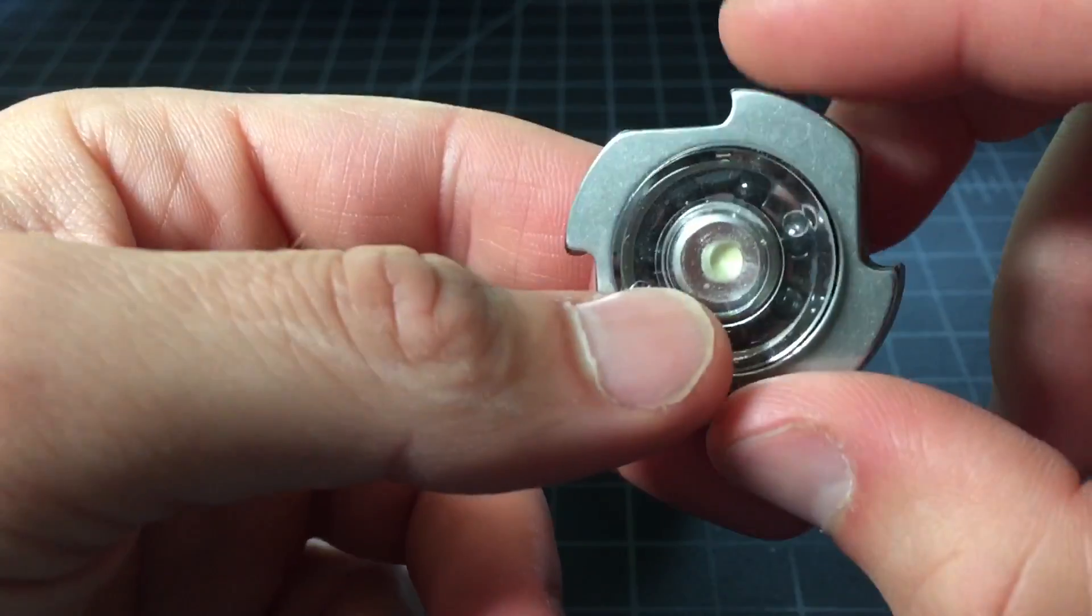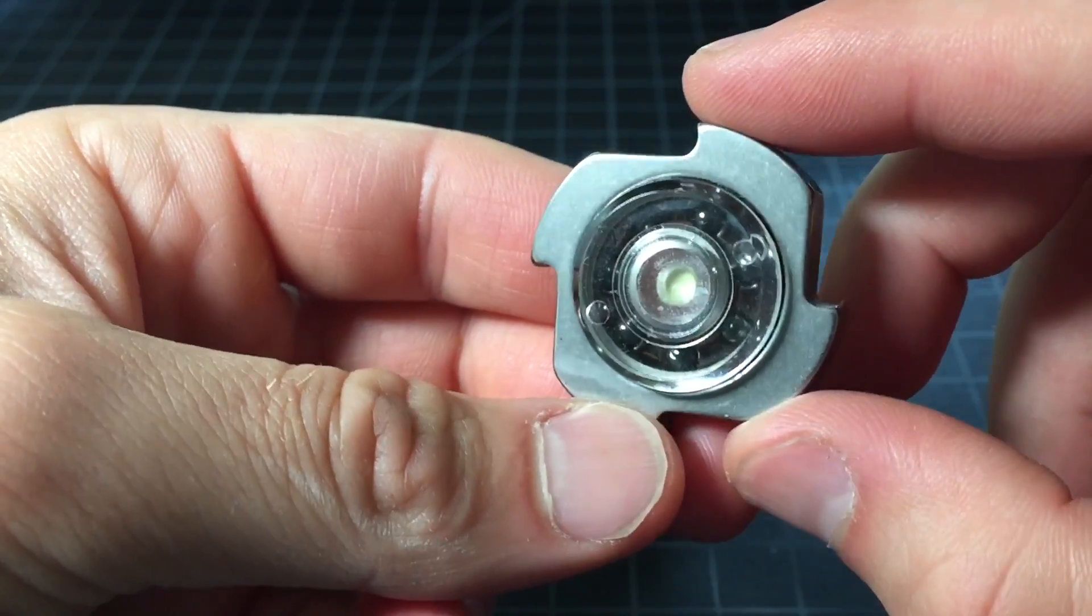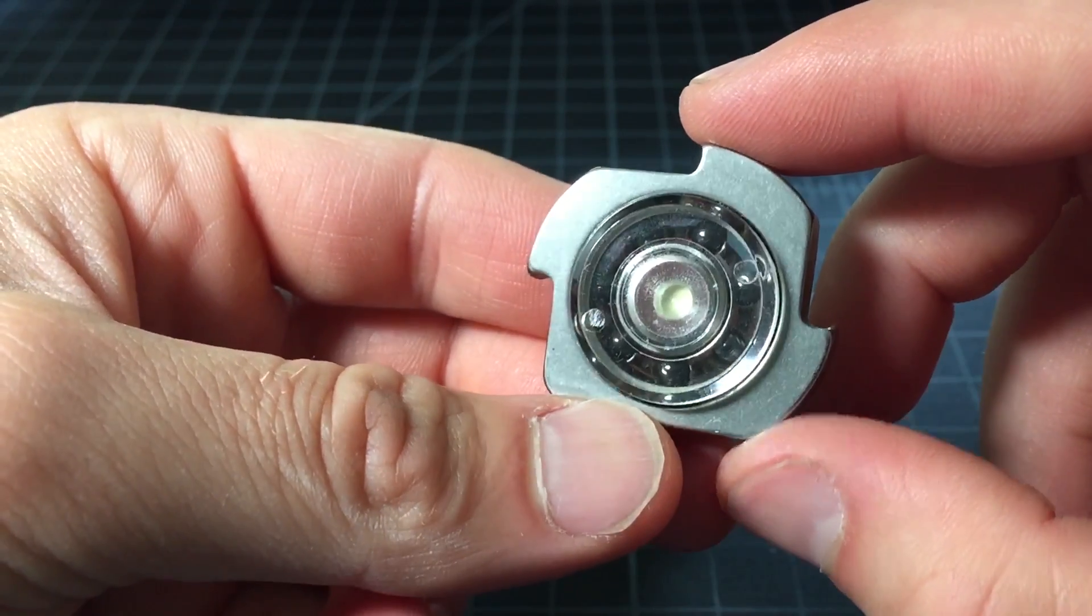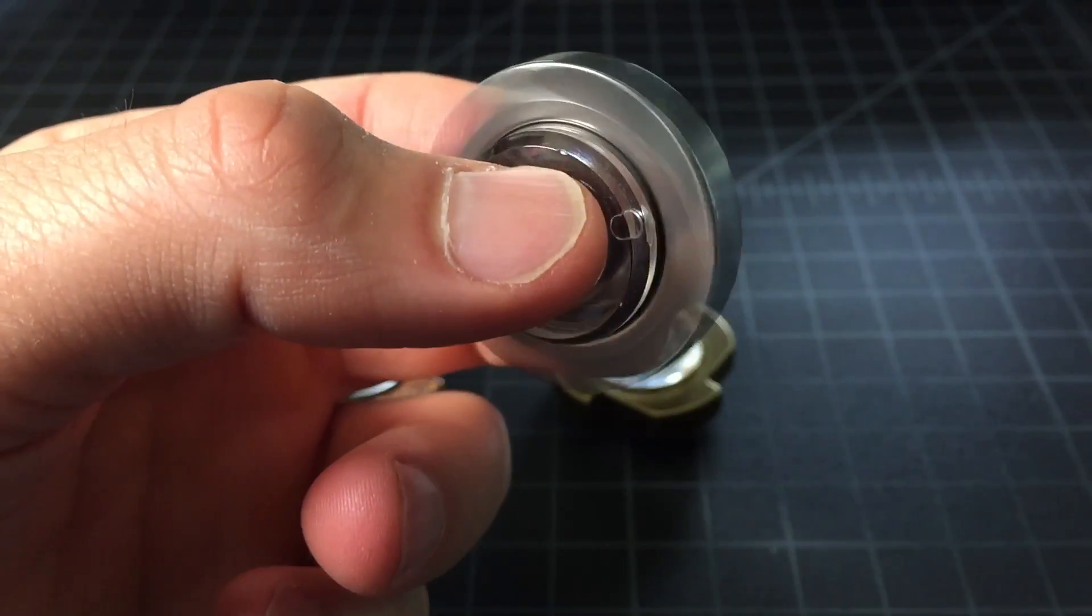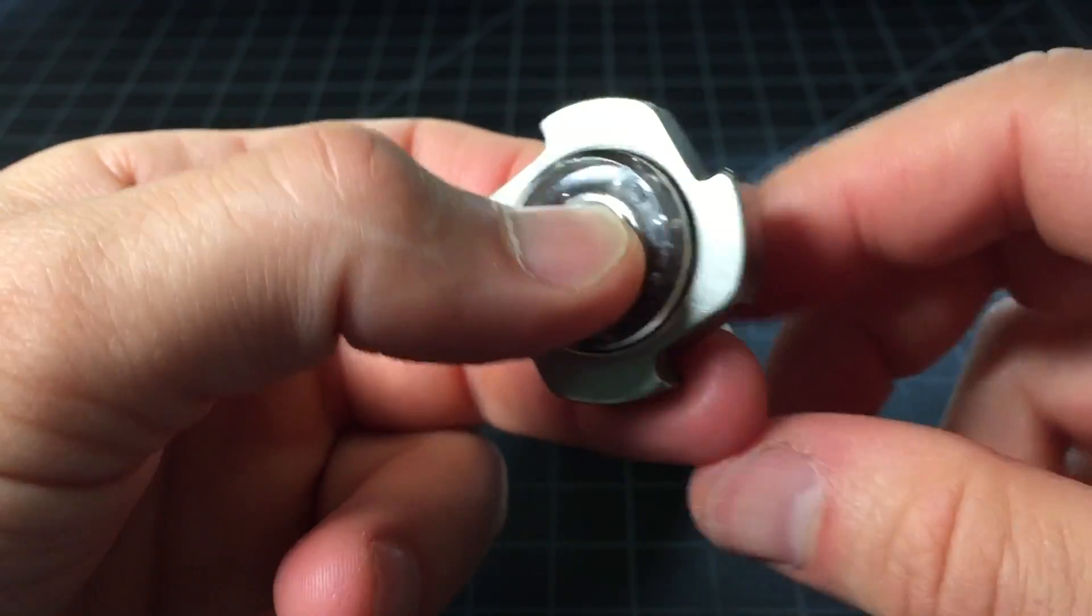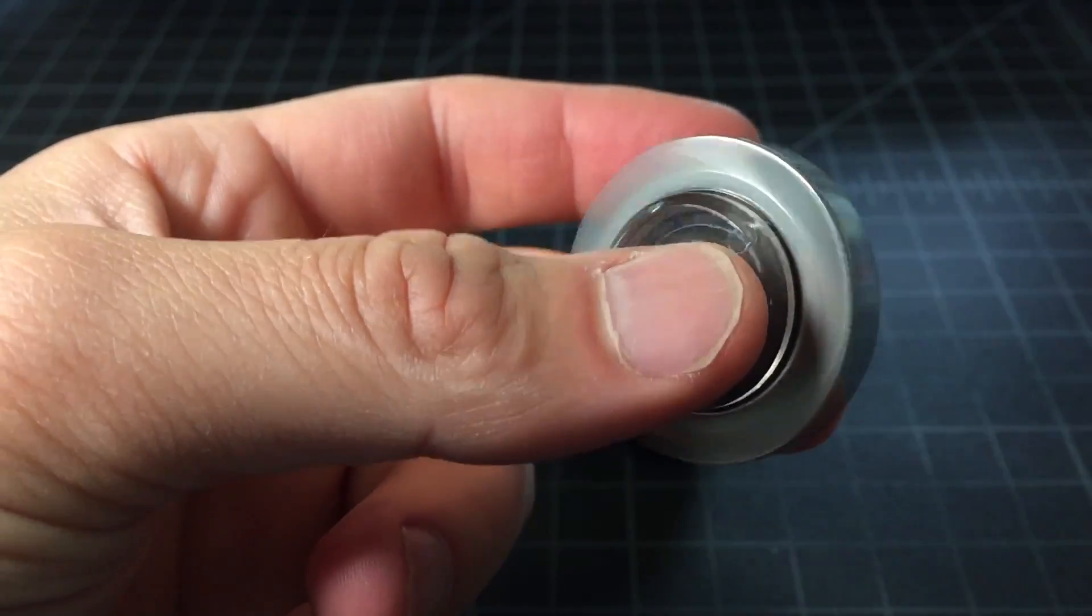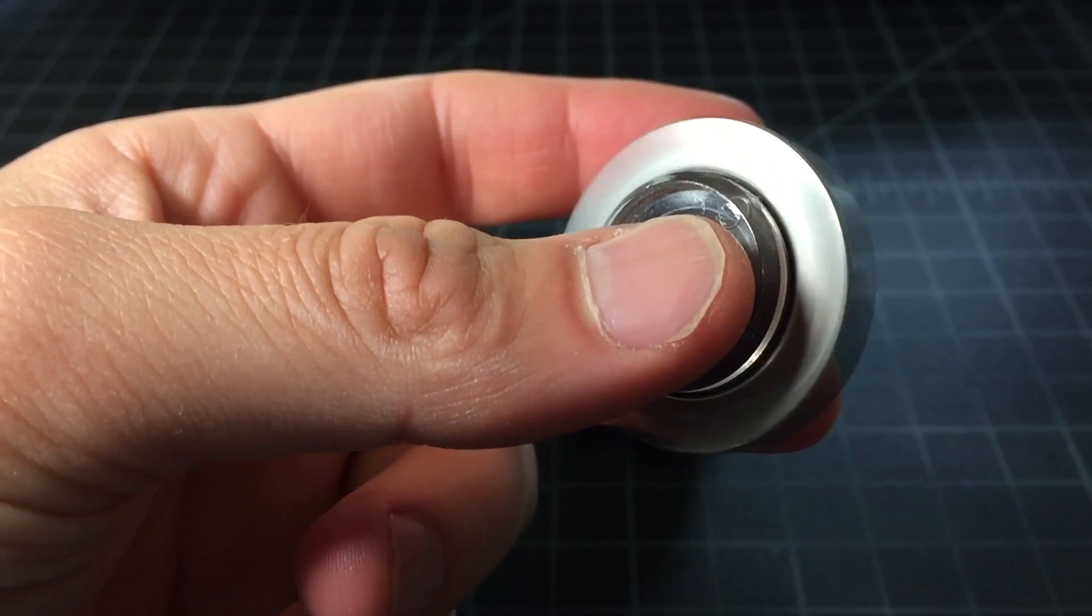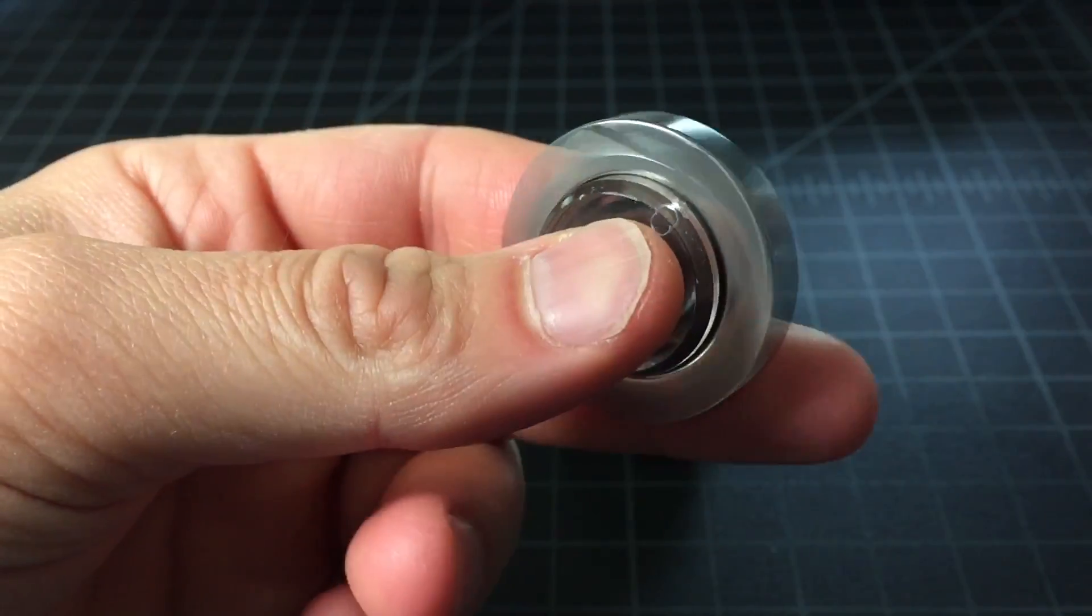And then lastly we have the steel dab with what they call the high speed bearings, and this is the cheapest entry level model. It's only $28. So it's more pitchy. Definitely has a higher speed sound to it. I don't know if it's actually higher speed, but it sounds higher speed because it's screechy and a little bit higher pitched.